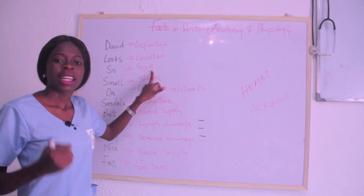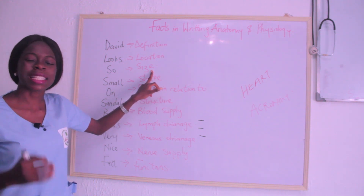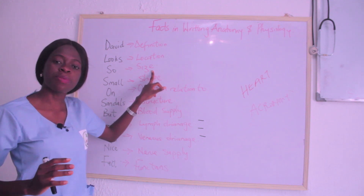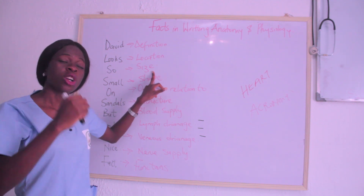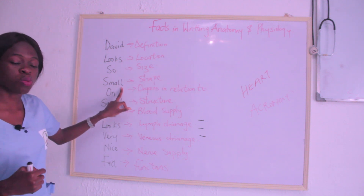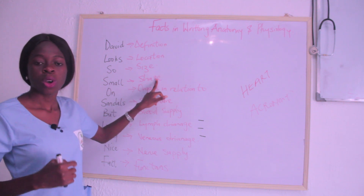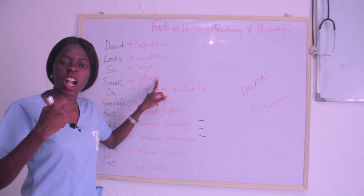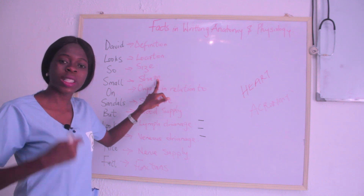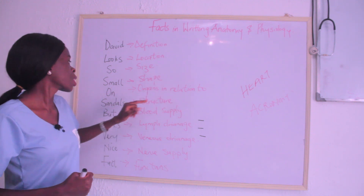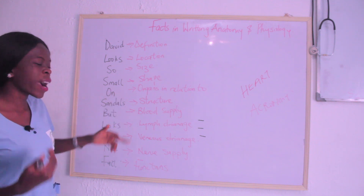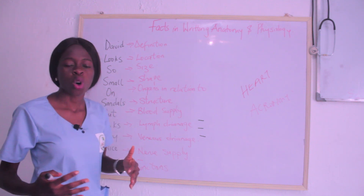The size of the heart is the same as that of your fist — so if my fist is like this, it simply means my heart is like this. Then the second S stands for Shape. We all know that the heart is a cone-shaped organ.